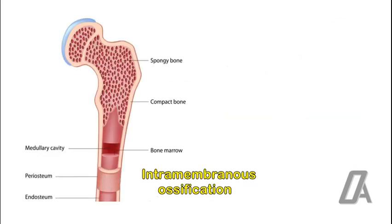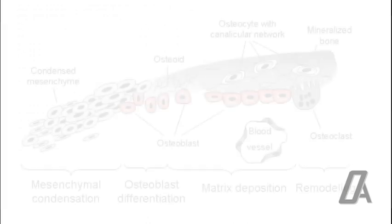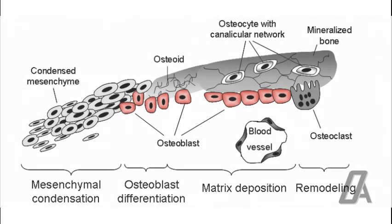Intramembranous, or direct bone formation, occurs on the outer surface of bone which is the periosteum, the inner surface which is the endosteum, sutures, and similar areas. Undifferentiated mesenchymal cells in the mesenchymal tissue differentiate directly into osteoblasts.